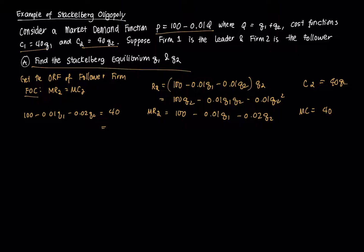Then I can do some simplifications because I need to isolate this with respect to Q2. Then I get 60 - 0.01Q1. I divide everything by 0.02. And I can get the output reaction function, the ORF of Q2 being equal to 3000 minus one half Q1. So you notice that we get Q2 which is some function of Q1.